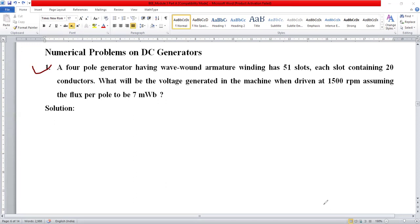First of all, I request you to read the question and note the parameters. A four-pole generator having wave wound armature. For wave wound armature, we can write that the number of armature conductors per parallel path A equals 2. If this were lap winding, we would write A equals the number of poles.